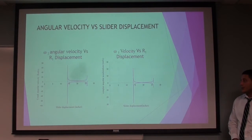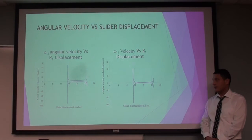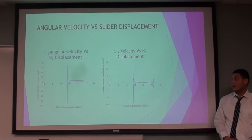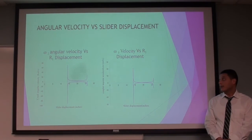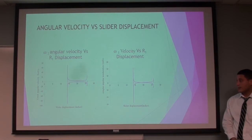These two graphs show the angular acceleration and velocity of the crank and the coupler link, versus the slider displacement.